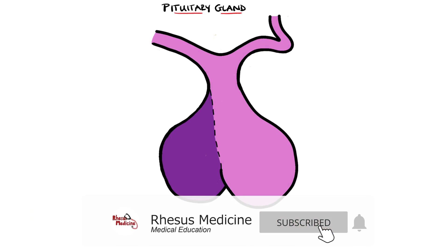The pituitary gland is a ductless gland of the endocrine system that secretes hormones into the blood. It's also known as the hypophysis.